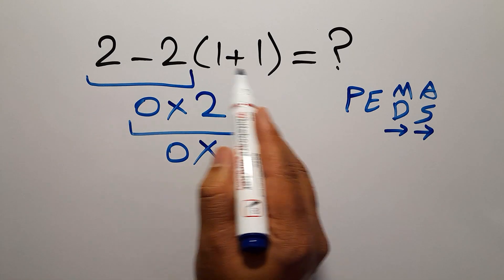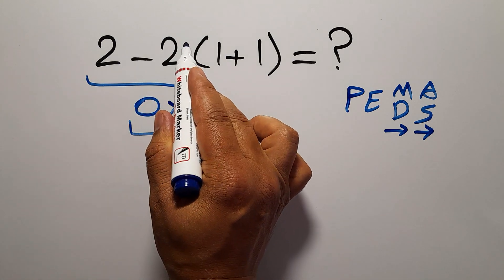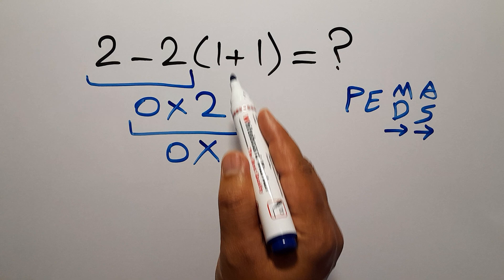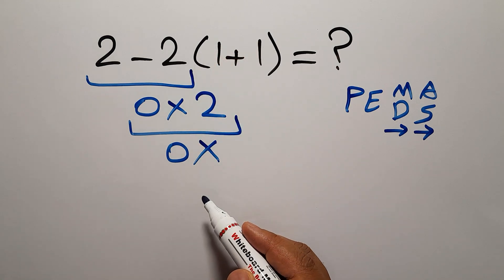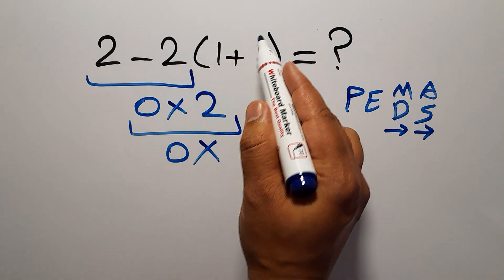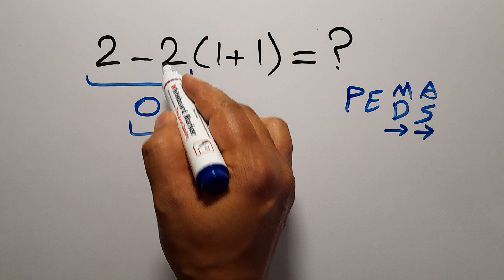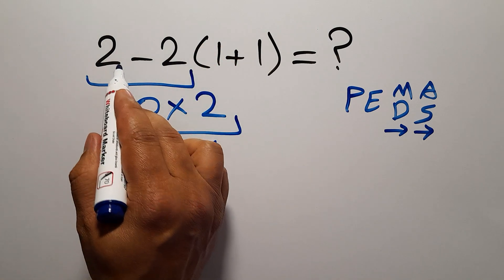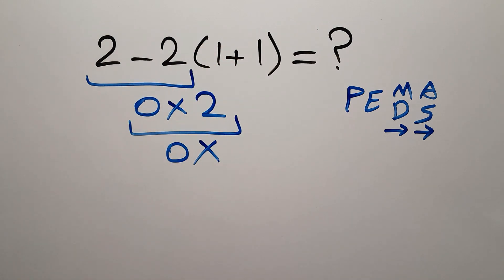Here, in this expression, we have one subtraction and one multiplication and one parentheses. First, we have to do this parentheses, then this multiplication, and finally this subtraction.